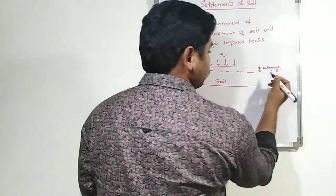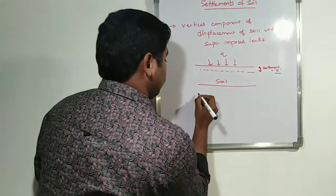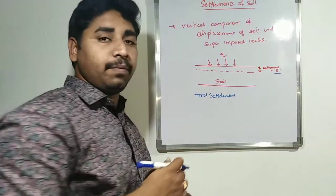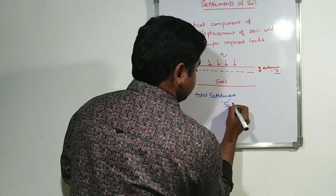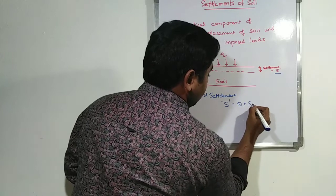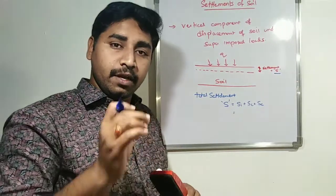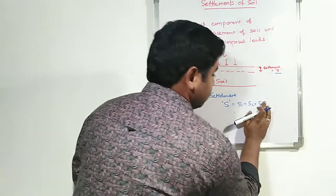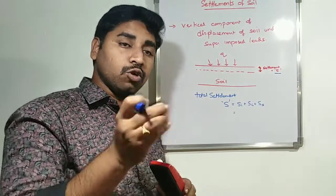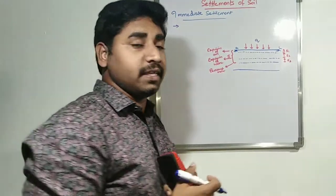The amount of settlement taking place because of the superimposed load in a soil base is referred to as S. The total settlement after completion of the settlement process is S = SI + SC + SS, where SI is the immediate settlement, SC is the primary consolidation settlement, and SS is the secondary consolidation settlement.